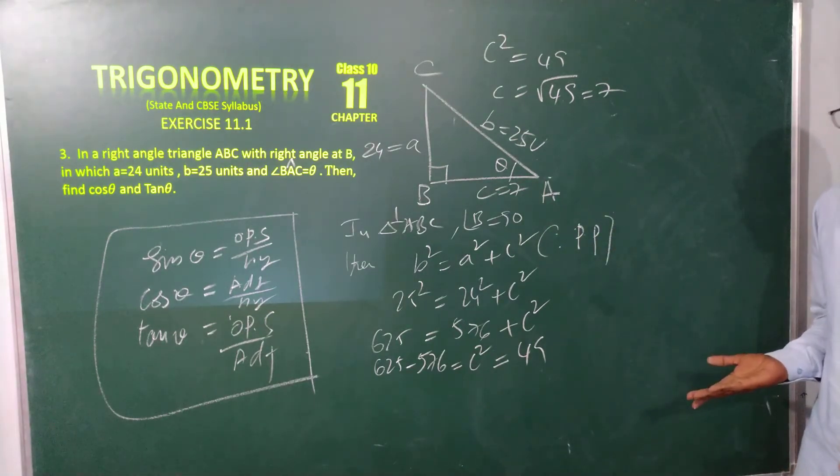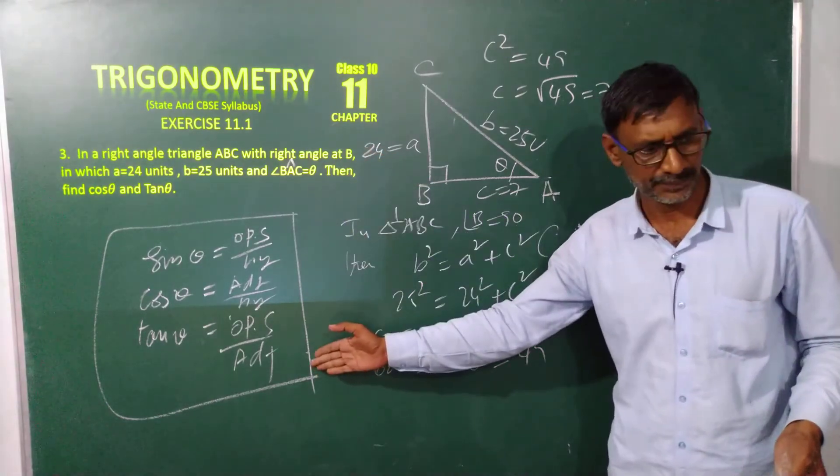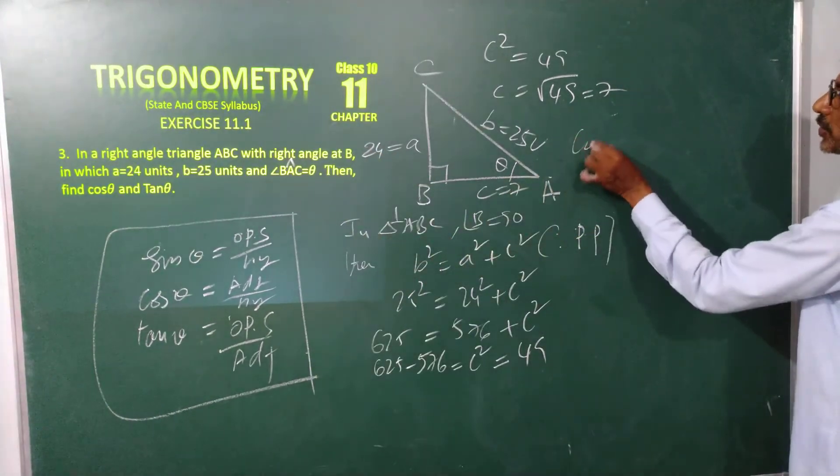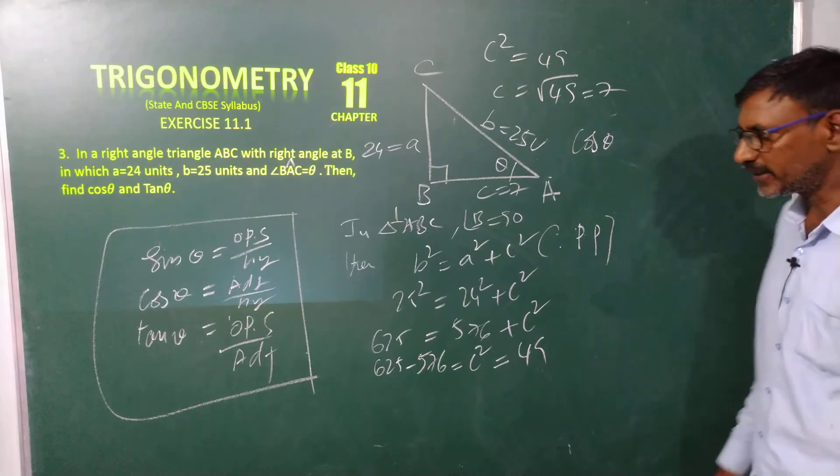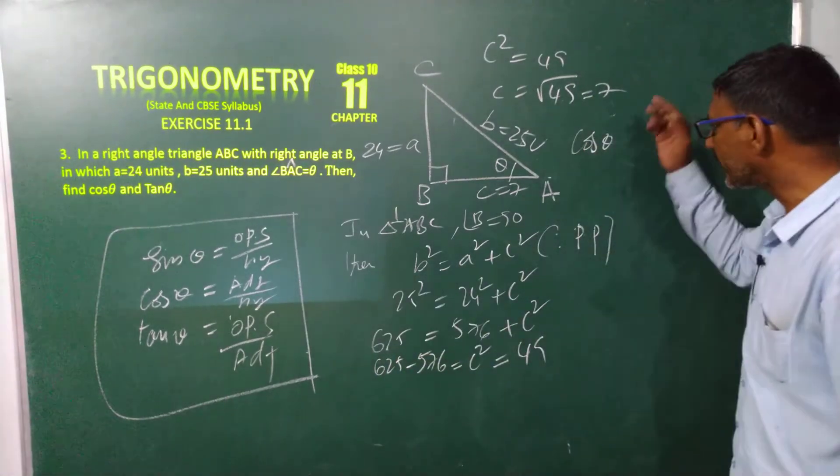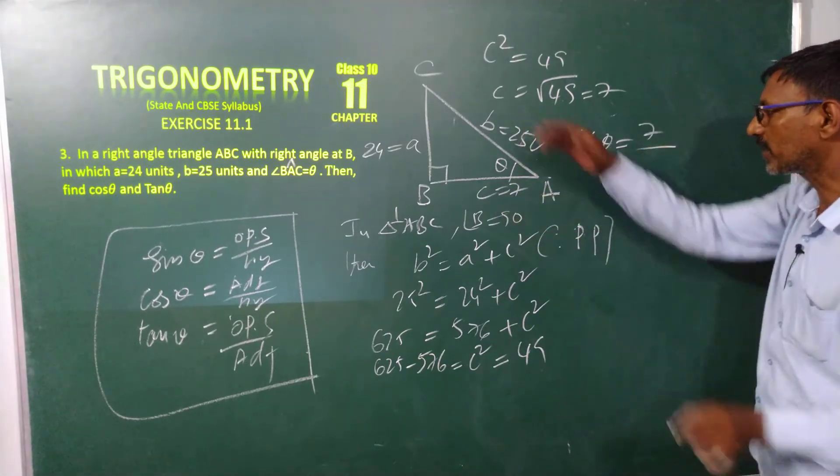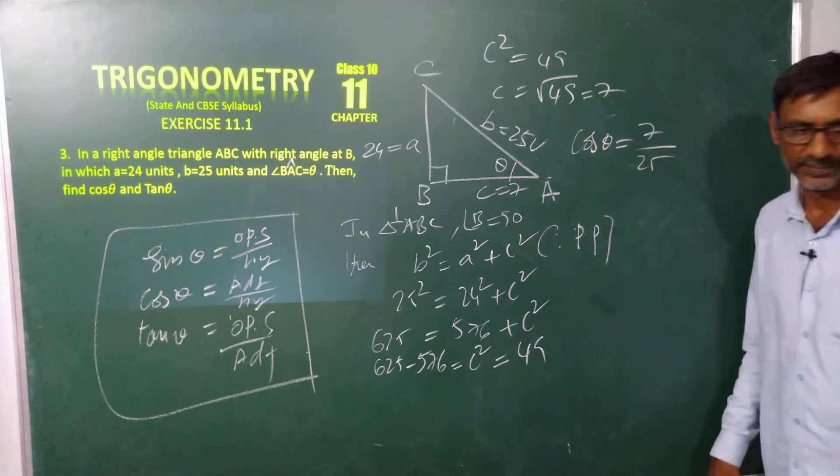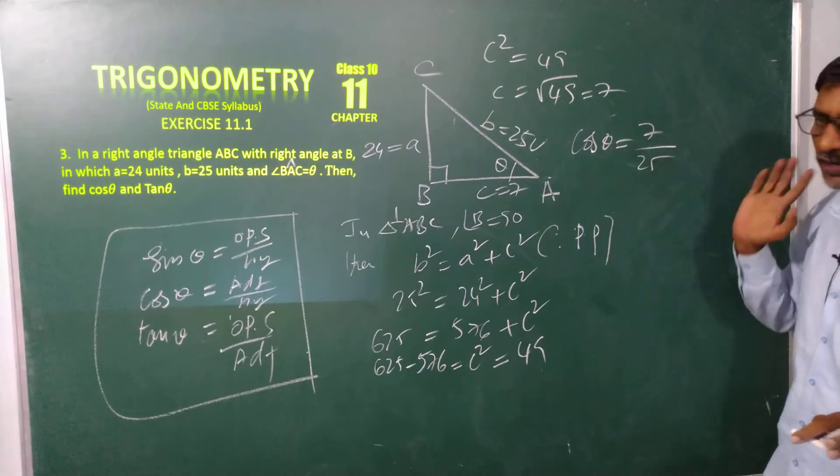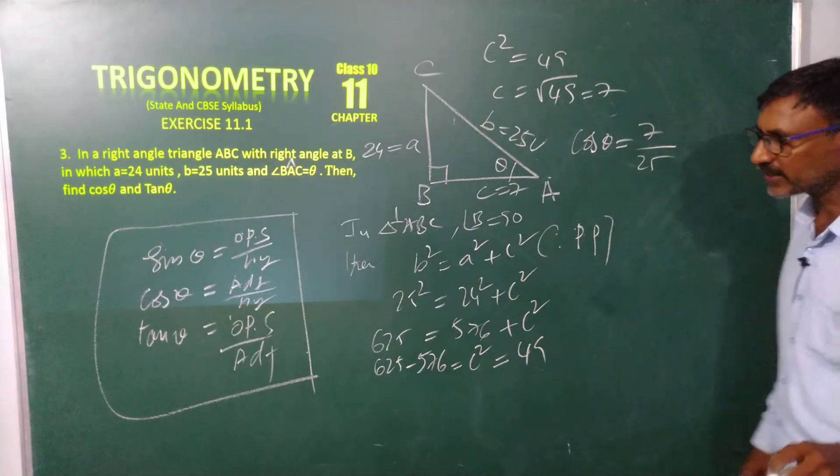Now I can easily find cos theta and tan theta. I already written here. So now going to cos theta. This is my cos theta. Adjacent side by hypotenuse. Adjacent side, this is my 7. My hypotenuse is 25. Cos theta is equal to 7 by 25.